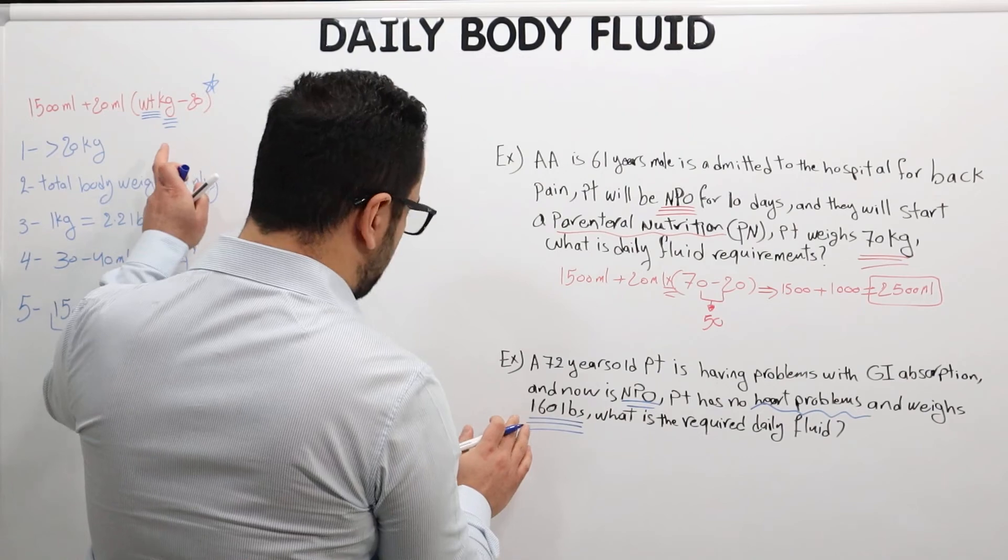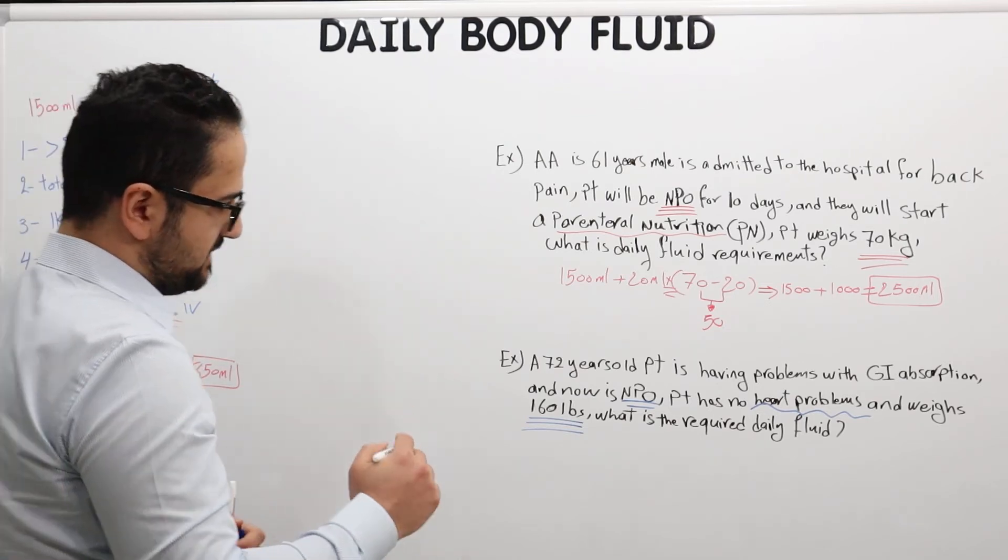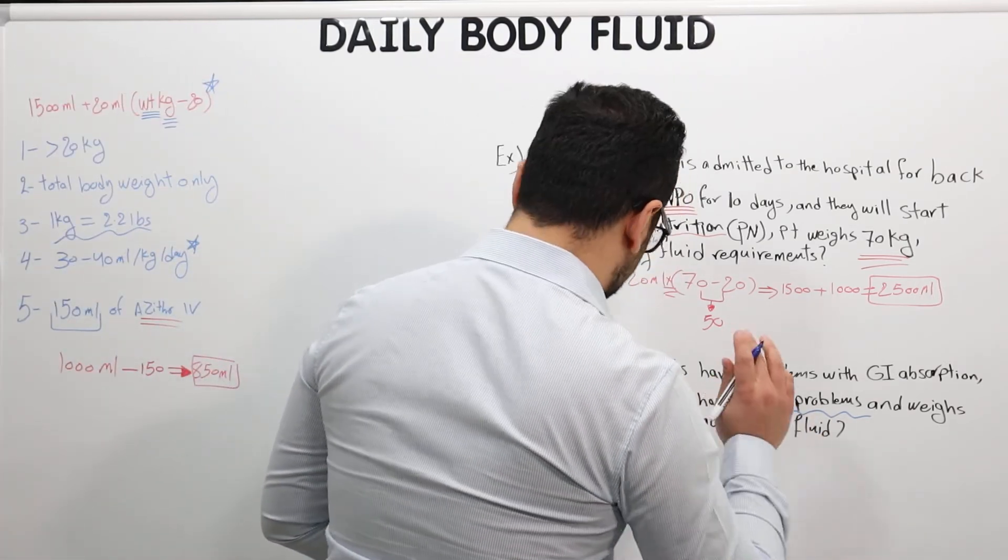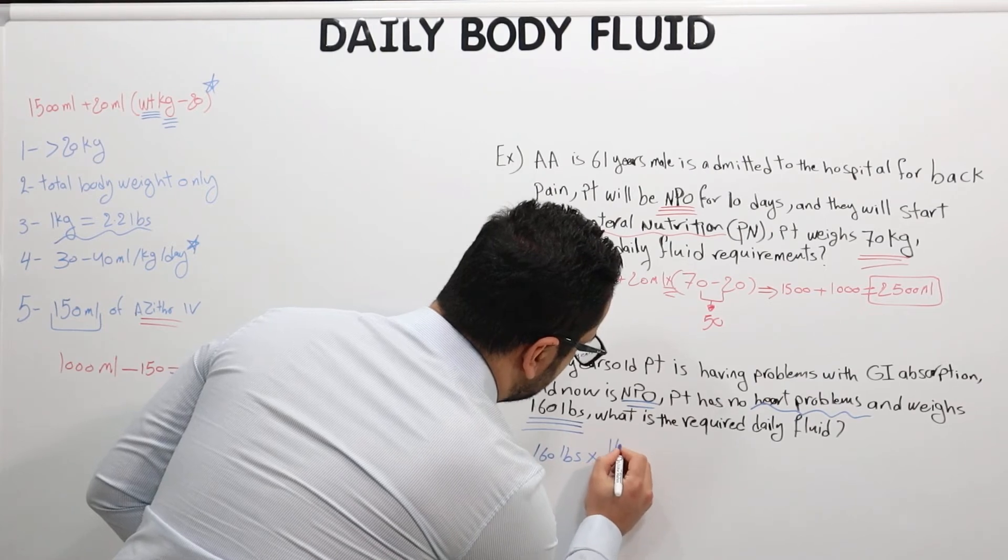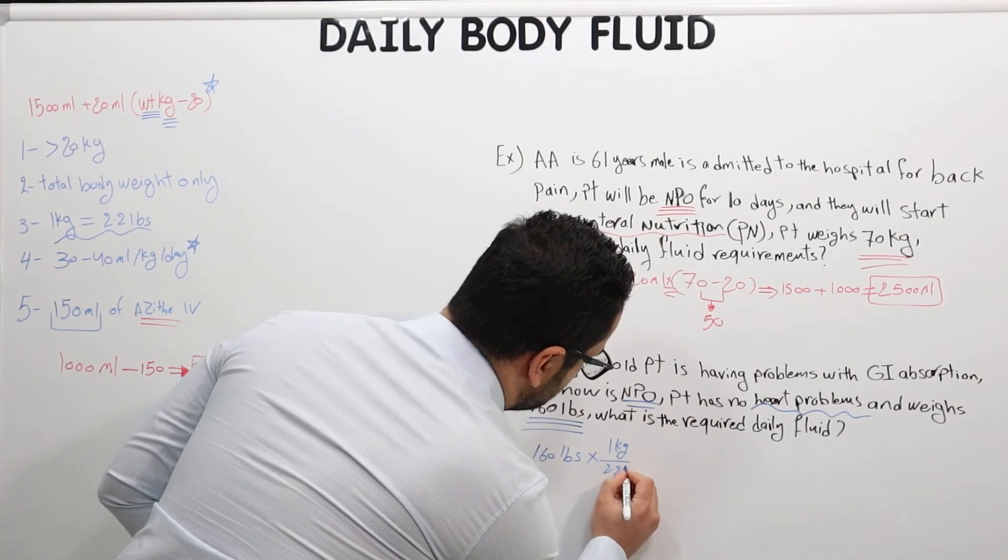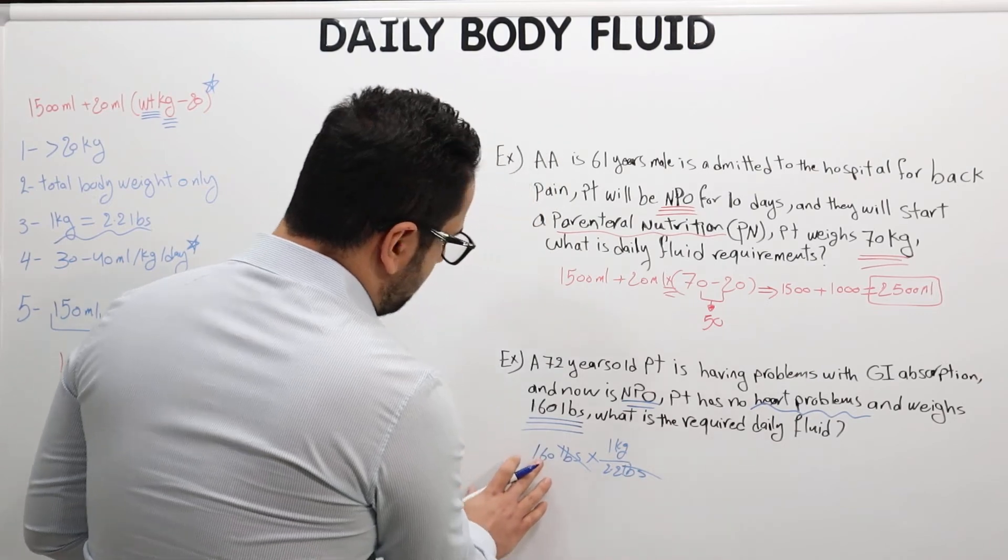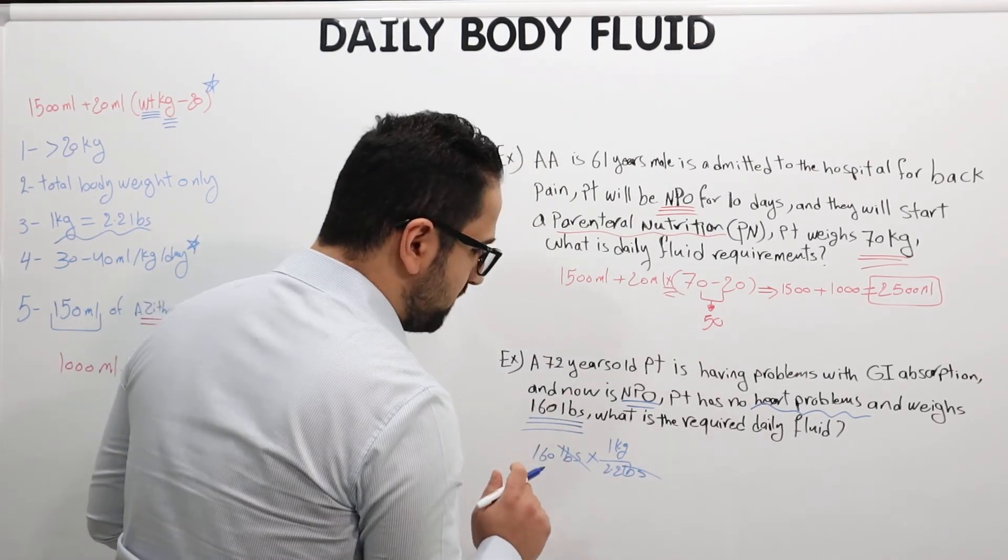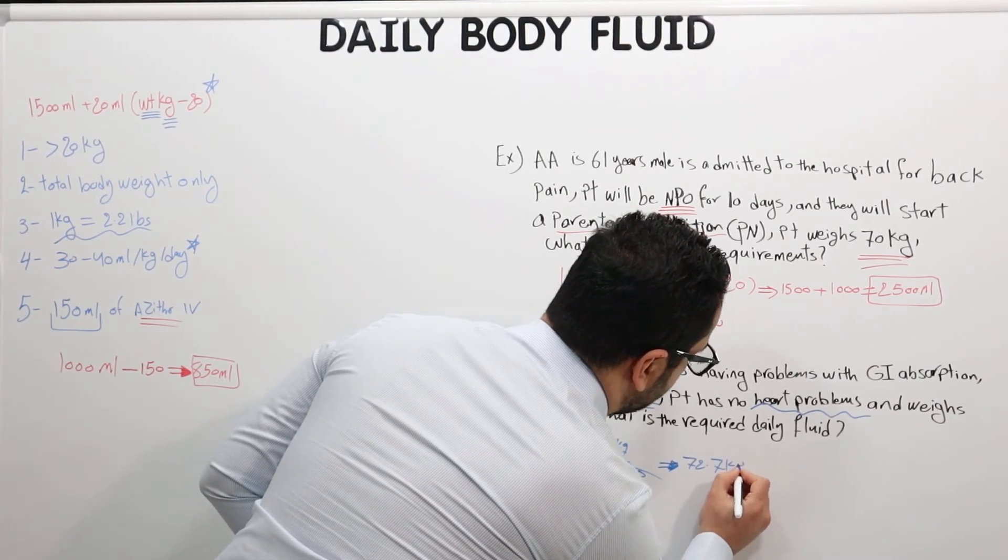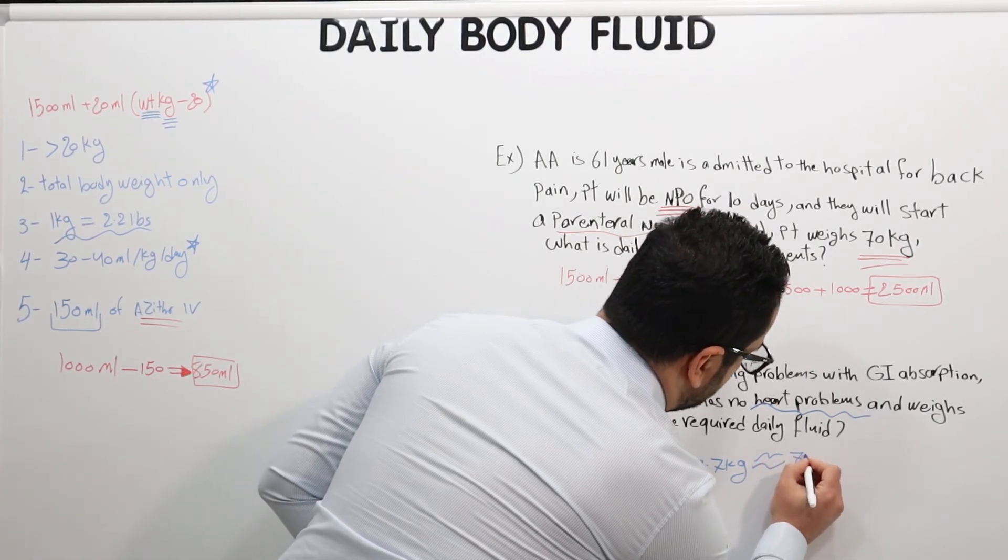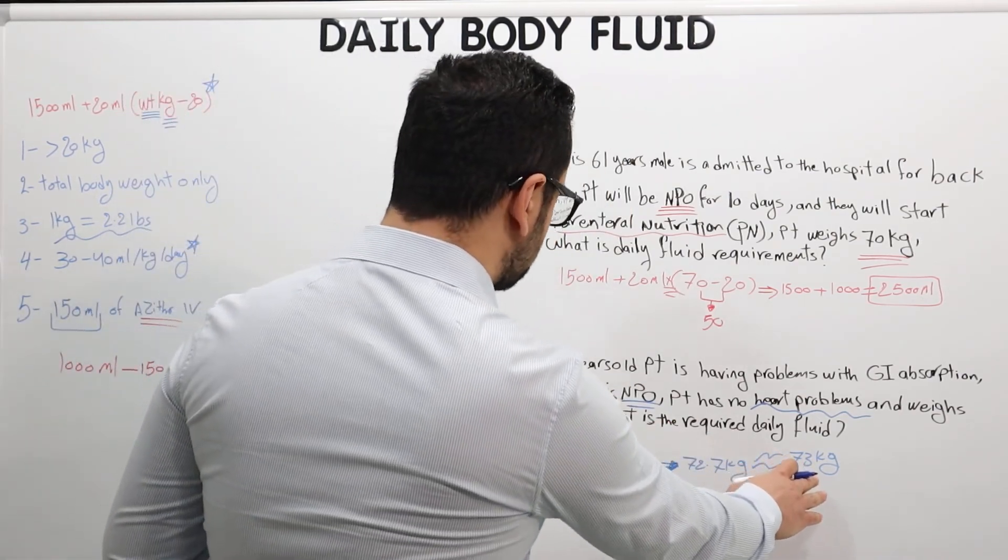So we do need to do a conversion to convert this to kilograms. And we know the conversion is basically one kilogram is 2.2 pounds. What is the required daily fluid? So first of all, let's convert. We have 160 pounds times one kilogram over 2.2 pounds in order to cancel the pounds with pounds. So we cancel this with this. And if you were to multiply 160, or actually divide 160 over 2.2, you should end up with 72.7 kilograms, which is approximately 73 kilograms. Now we have the kilograms.